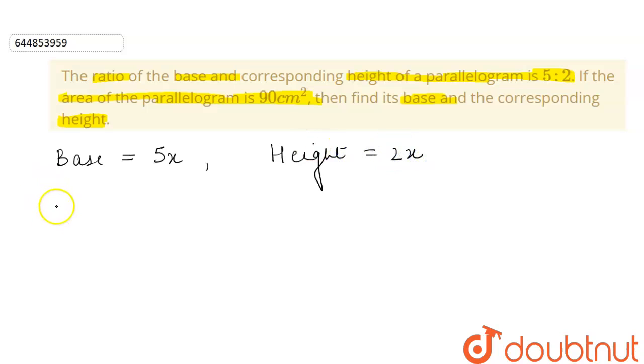Now we know that the area of a parallelogram is given by base into height. So if we put in the values, we will get this to be equal to: area is 90 equals base is 5x into height is 2x.